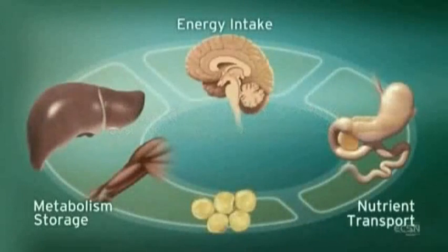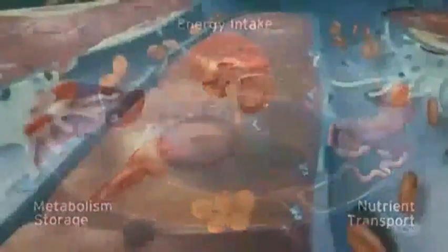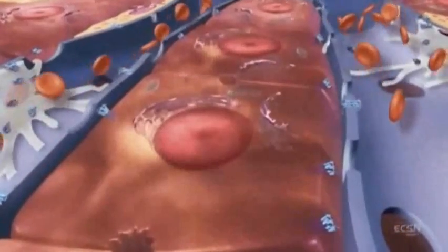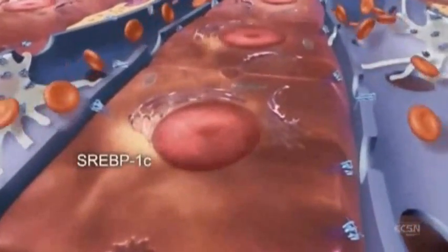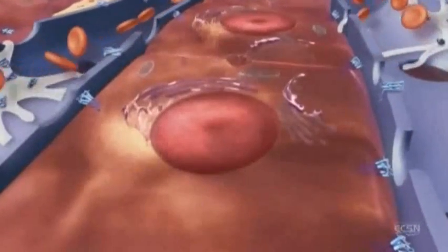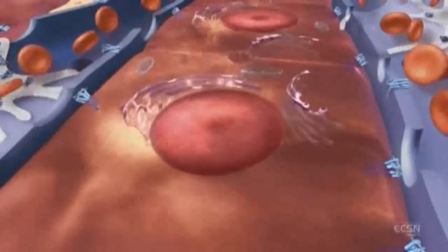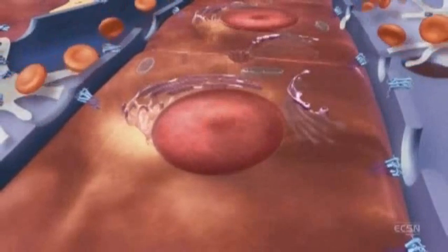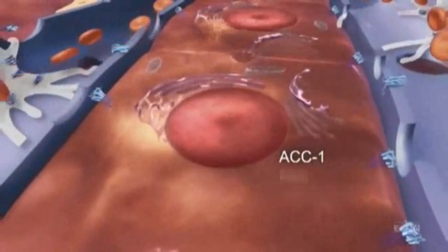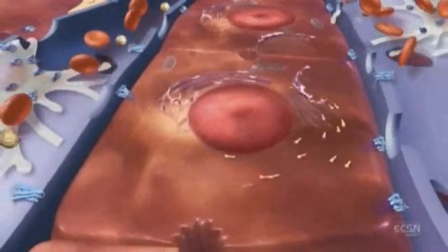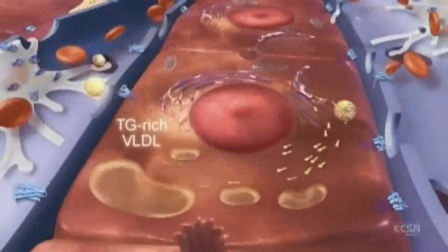Chronic stimulation of the ECS is associated with dyslipidemia. Activation of CB1 receptors increases expression of SREBP1C, a lipogenic transcription factor, and increases fatty acid synthesis. SREBP1C increases production of lipogenic enzymes, ACC1 and fatty acid synthase. Increased fatty acid synthesis can lead to production of large triglyceride-rich VLDL.